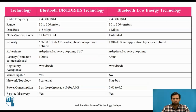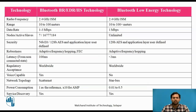Next, we are going to see the technologies, specifications, or configurations of the two different variants of Bluetooth. One variant is Bluetooth BR/EDR or HS — that is Basic Rate, Enhanced Data Rate, or High Speed — and another is Bluetooth Low Energy. The radio frequency range for both variants is 2.4 GHz. The range for Bluetooth BR/EDR or HS is 10 to 100 meters and for Bluetooth Low Energy it is 10 to 100+ meters.